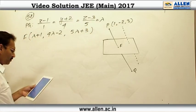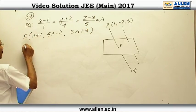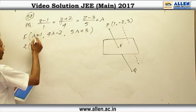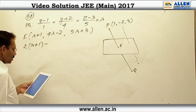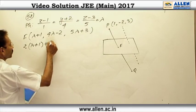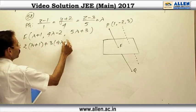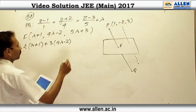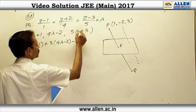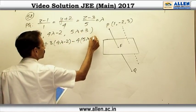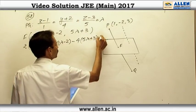F lies on the plane, that is why it will satisfy the equation 2x, x is lambda plus 1, then 3y, y is 4 lambda minus 2, minus 4z, z is 5 lambda plus 3 plus 22 equals to 0.